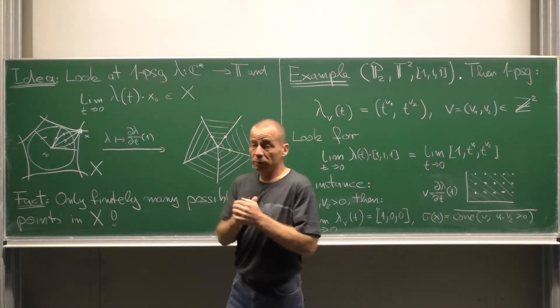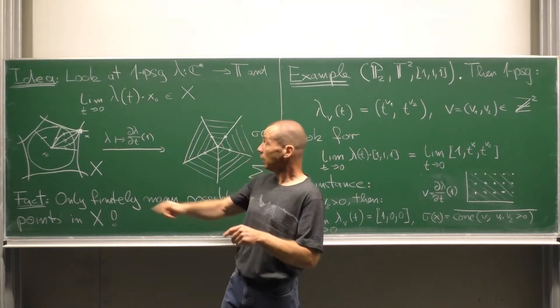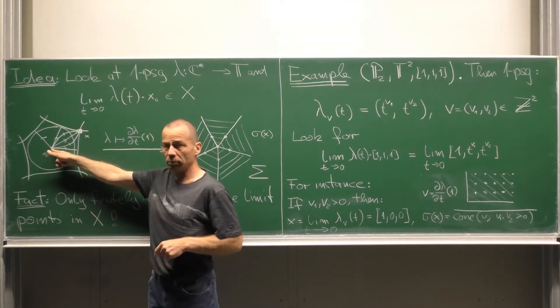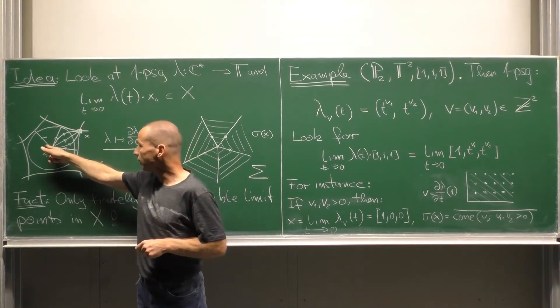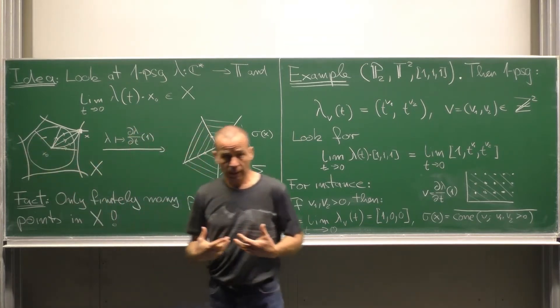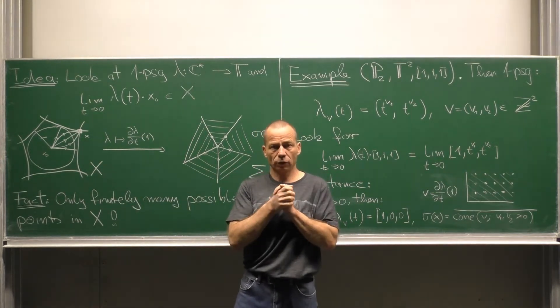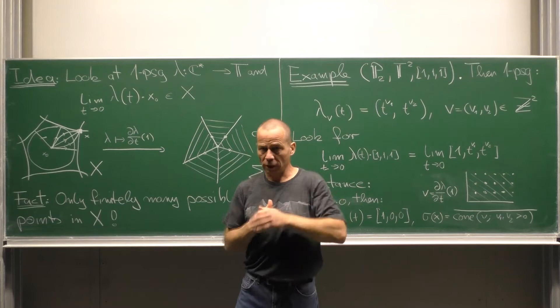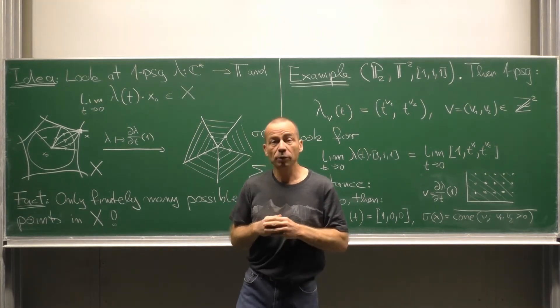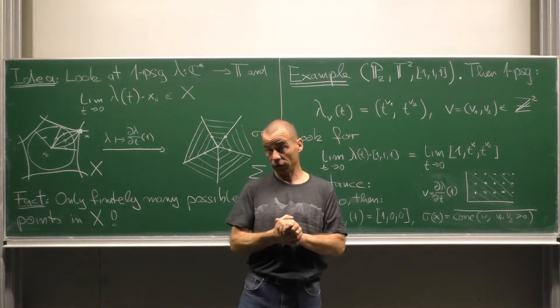Now if we take such a one parameter subgroup and start at our base point and then let T tend to zero, that means in general that we approach the boundary of the torus and if we are lucky end up with a limit point sitting in the boundary of the torus.